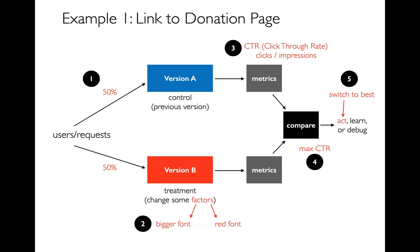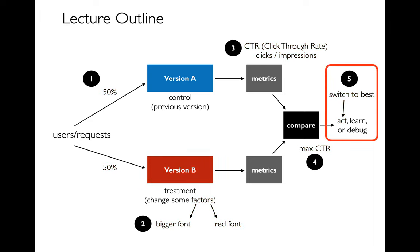We choose how we want to compare metrics and what matters to us — maybe we decide to maximize click-through rate. Based on that, we have some outcome, often taking action by switching to whatever performs best. I'm going to talk about all the different parts of this pipeline in reverse order, because it makes sense to start with what we're hoping to achieve.